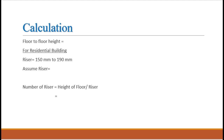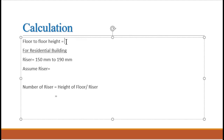Now we need to do the calculations to know the length and width of the staircase. First of all, we need to know the floor-to-floor height. Generally the floor is 10 feet 6 inches above the bottom floor, so the floor-to-floor height is 10 feet 6 inches. We have to convert that into meters — in meters it is 3.2 m. For a residential building, the range of riser is from 150 mm to 190 mm.